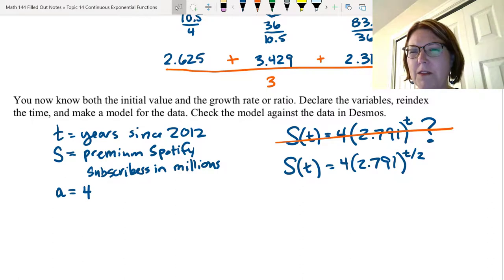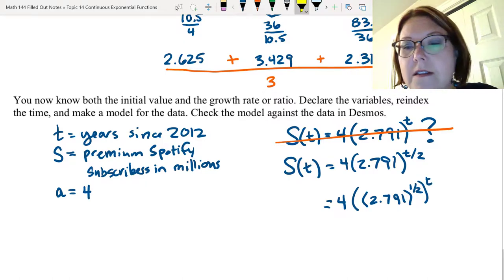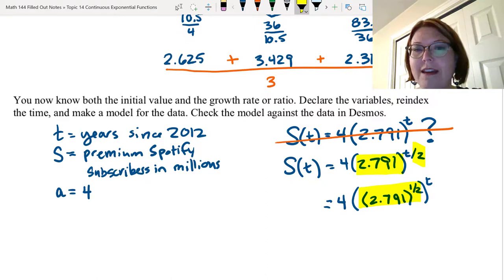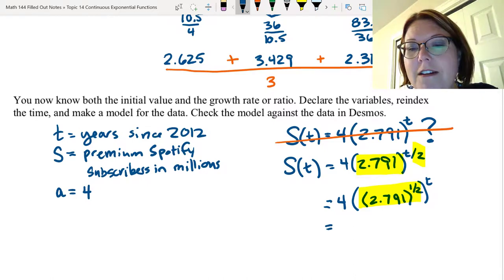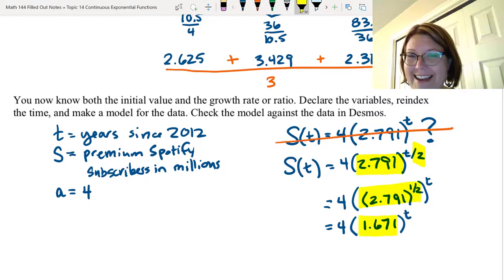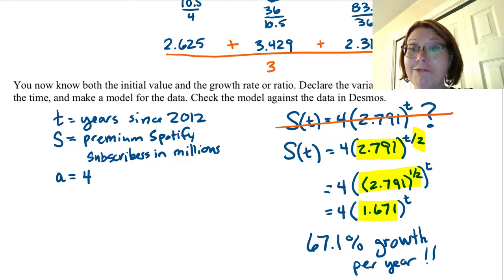Now this actually makes it kind of difficult to see what the true growth factor is because it's not raised to the t power. But we can do a little bit of manipulation on this using our amazing talents with exponents. Let me just rewrite this as four times left parentheses times another left parentheses and then 2.791 right parentheses to the one half power right parentheses to the t power. So you can see I've taken the 2.791 to the one half power and moved it inside the parentheses with the t on the outside. I can actually calculate that 2.791 to the one half power which gives us 1.671 and then that's to the t power. And now I can actually see the growth factor for this. It's 1.671 or a growth rate of 67.1 percent per year which is a very high growth rate.